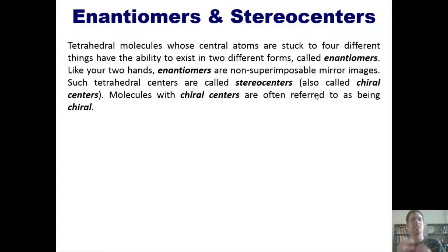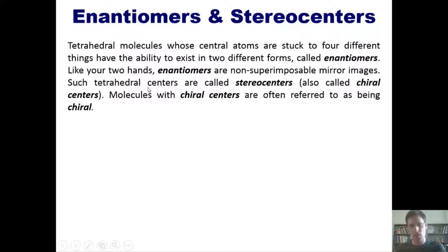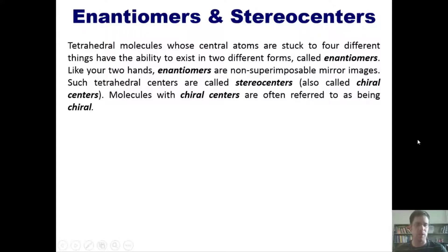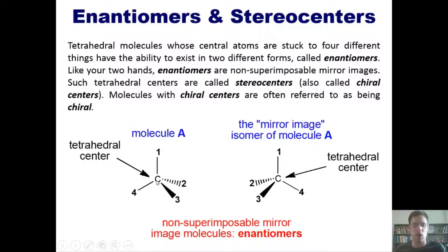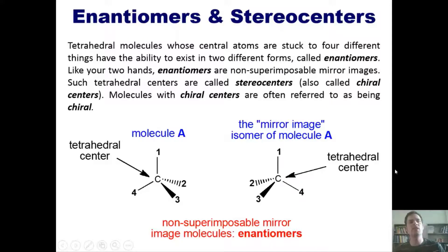If you have any molecule that contains a carbon bonded to four different appendages in a tetrahedral geometry, you have a molecule that can exist as one of two enantiomers — two non-superimposable mirror images. Such tetrahedral centers are called stereocenters, and are sometimes also called chiral centers or chirality centers. Molecules that have chiral centers are referred to as being chiral.